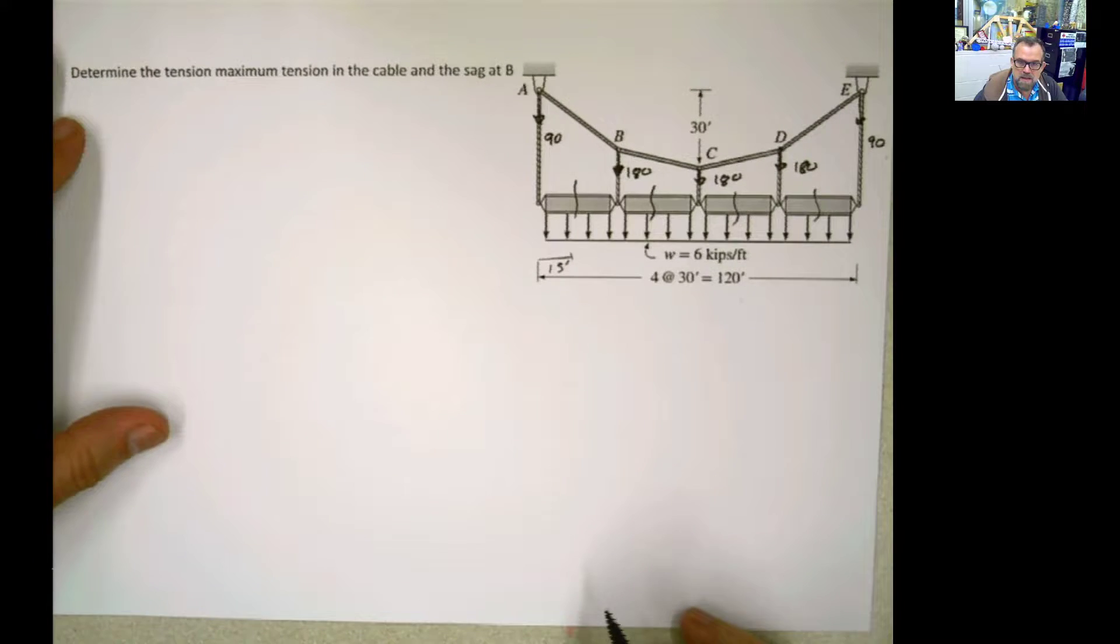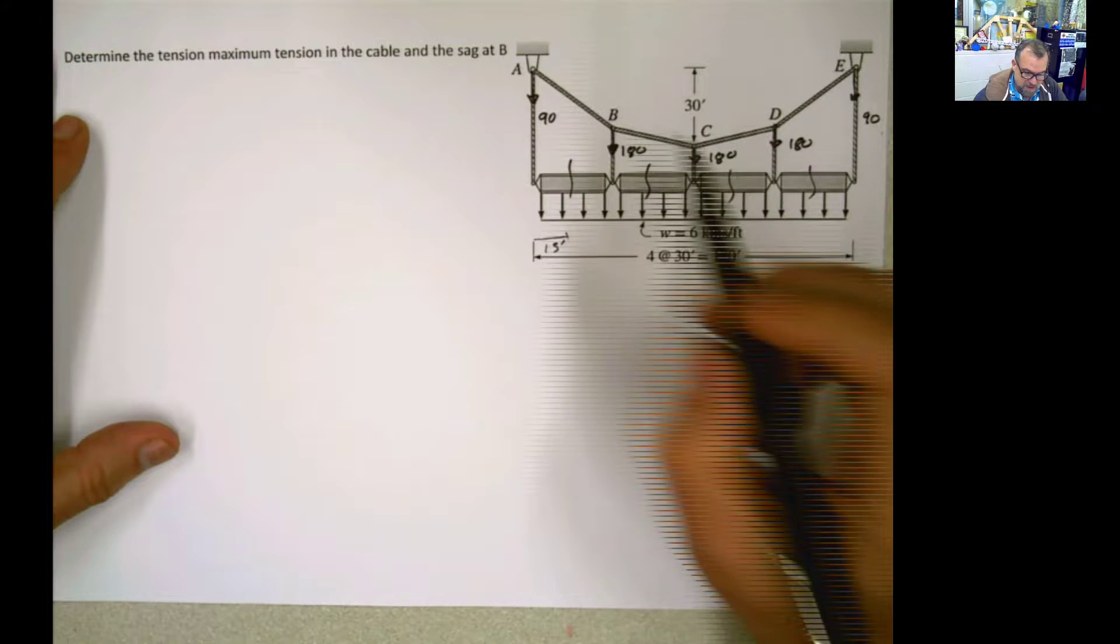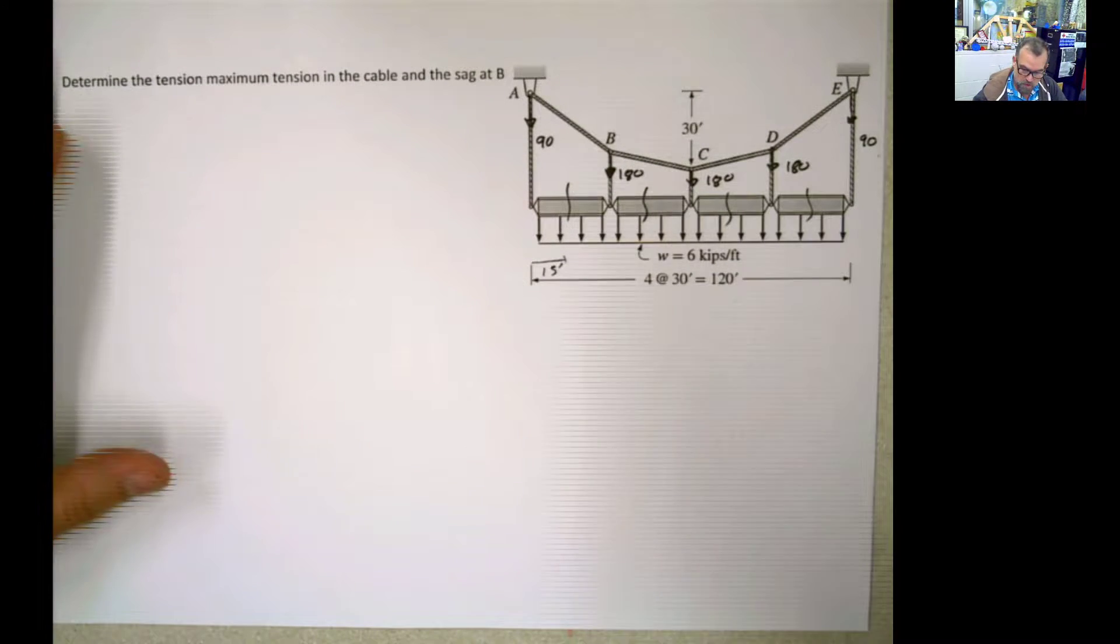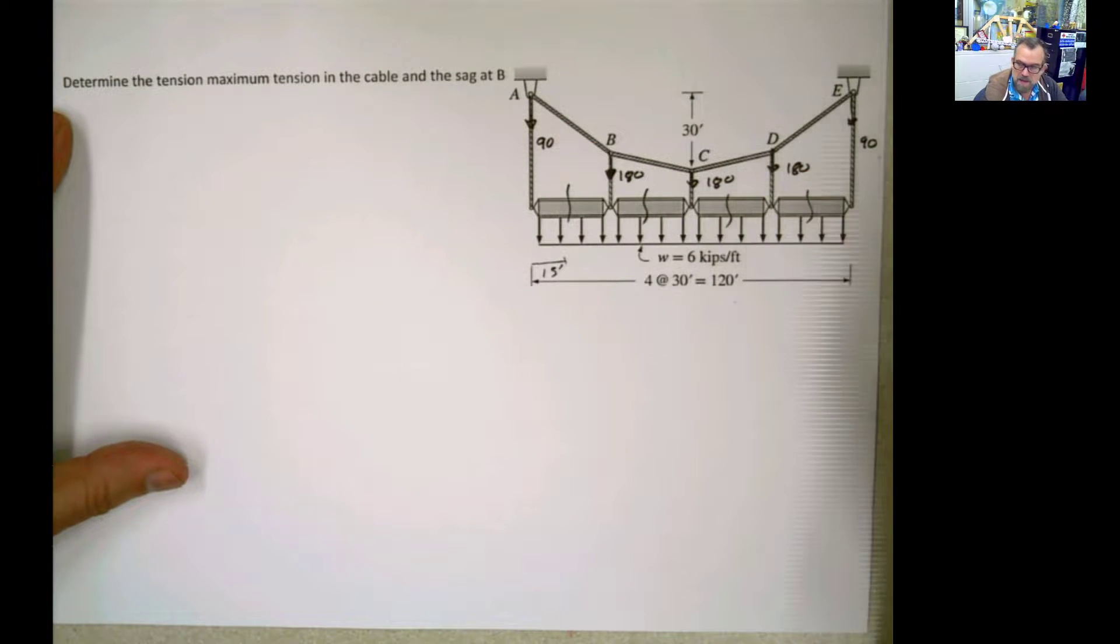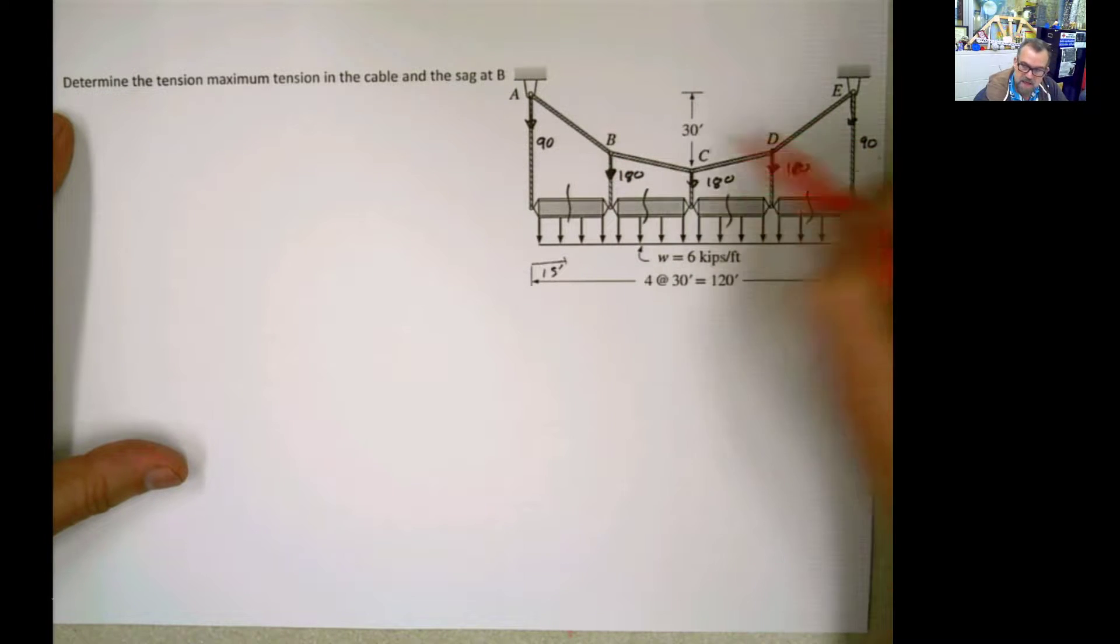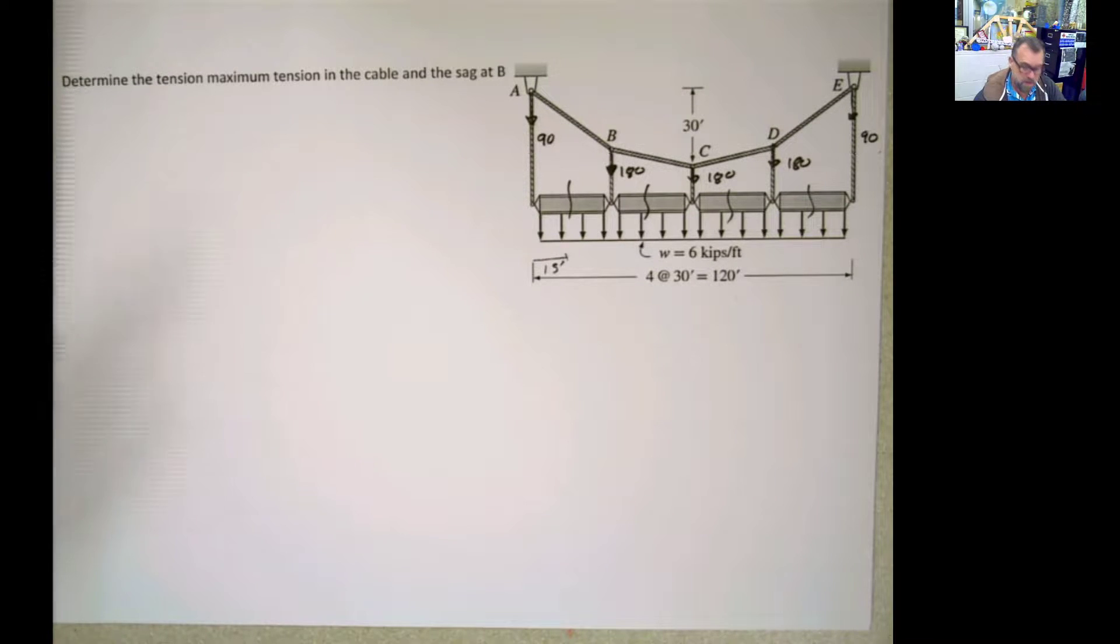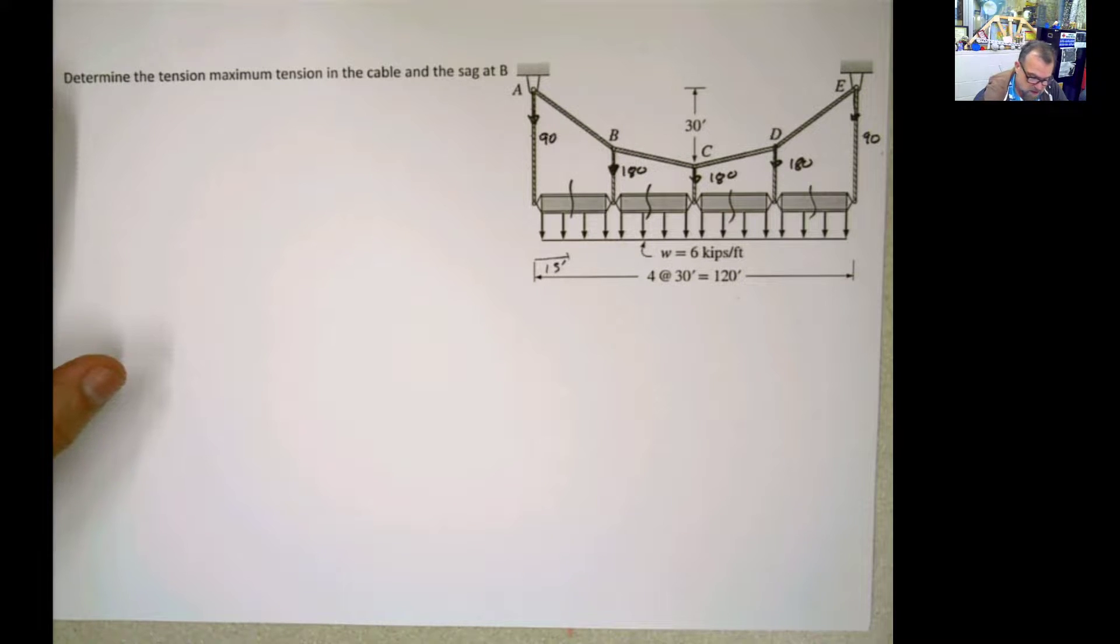So the problem is asking, remember, the maximum tension and the sag at B. The maximum tension happens when the cable has the maximum slope. We already discussed that. And the maximum slope is happening here. If you don't know, then you have to calculate every one of the sags and every one of the slopes and check and verify where the maximum slope is happening. But we know that is happening there.